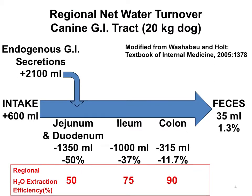Using a dog as a model, let's look at the net water turnover in the canine GI tract, using the example of a 20-kilogram dog. Endogenously, a dog this size would have about 2.1 liters of secretions. Add to that the dog's intake of 600 milliliters per day—about 30 milliliters per kilogram—giving 2,700 milliliters total, of which about half is removed in the jejunum and duodenum.